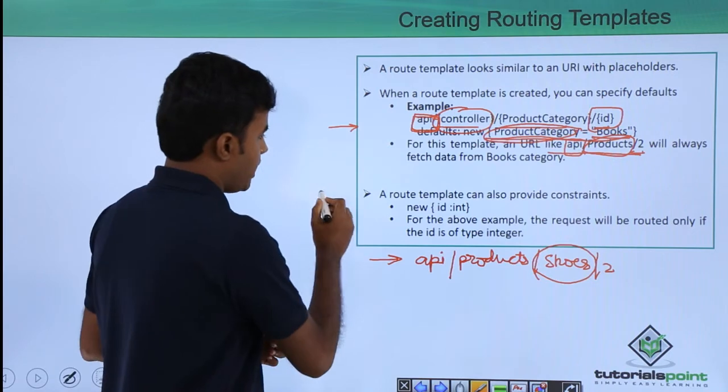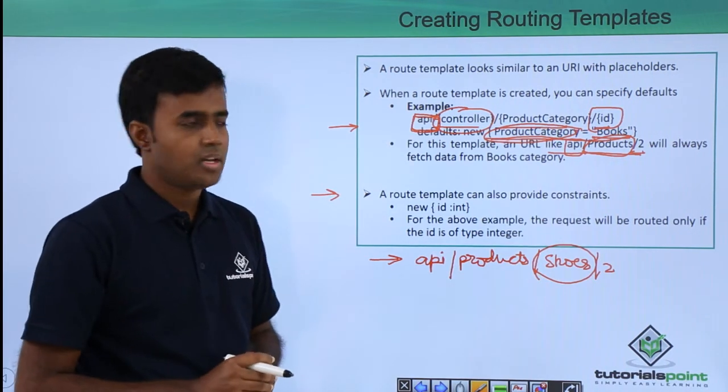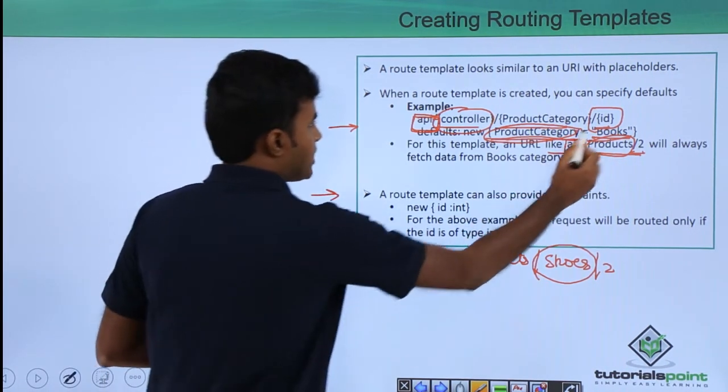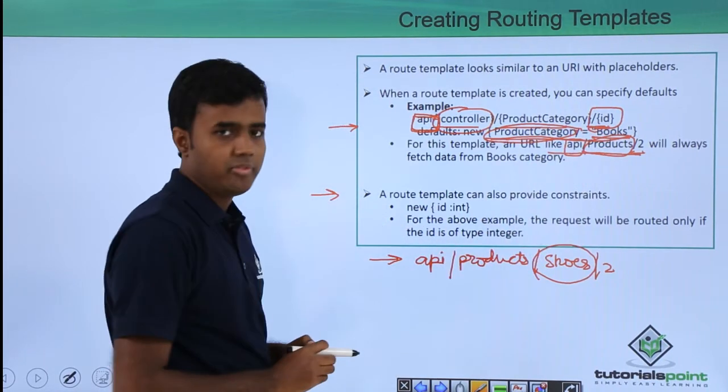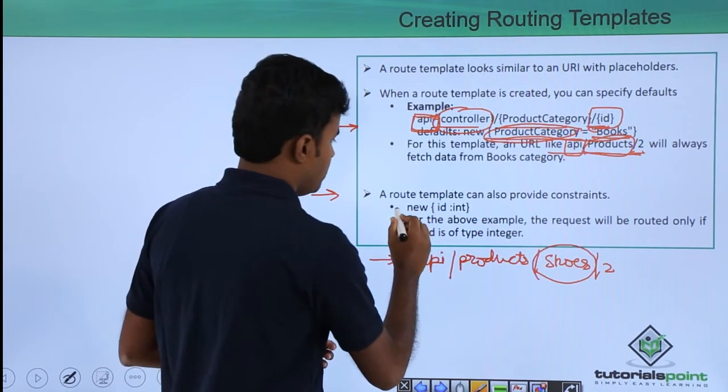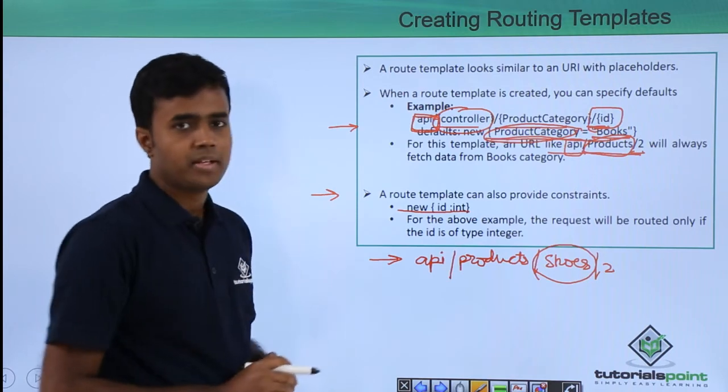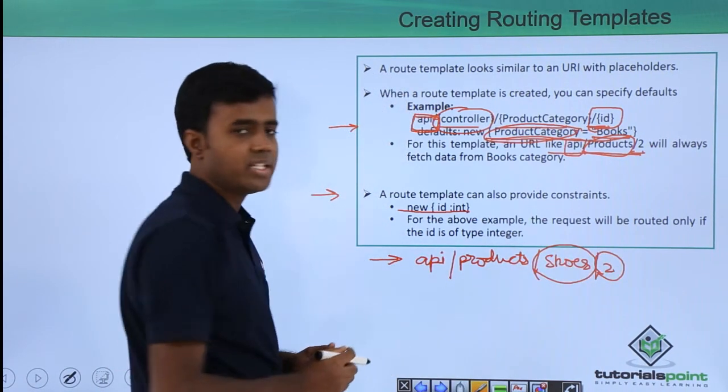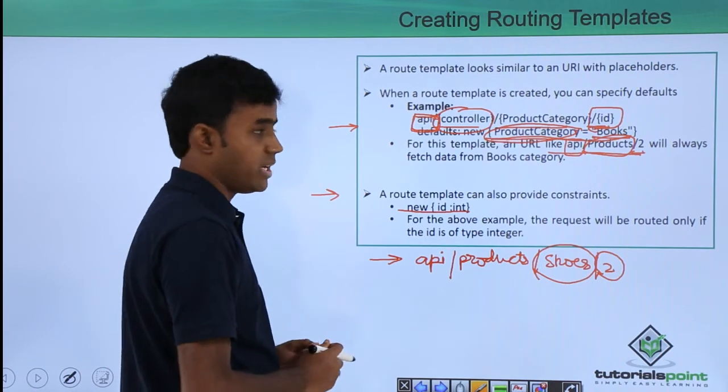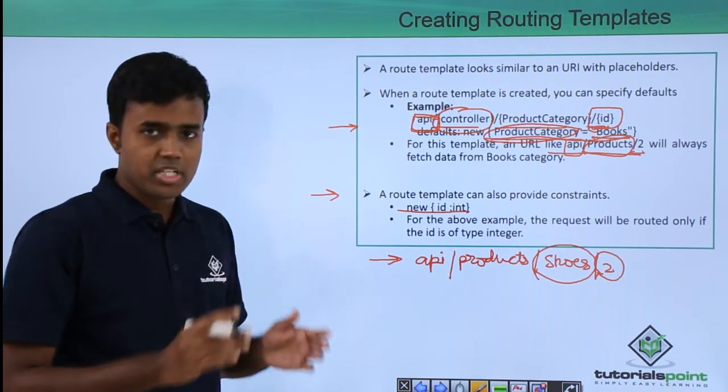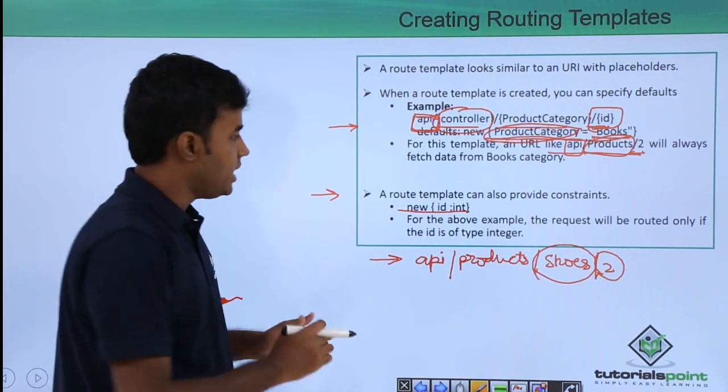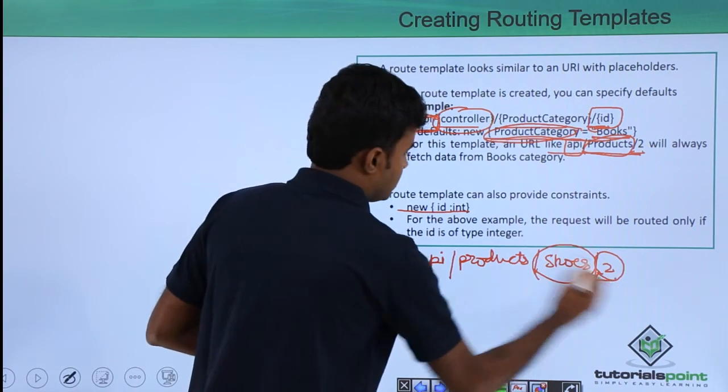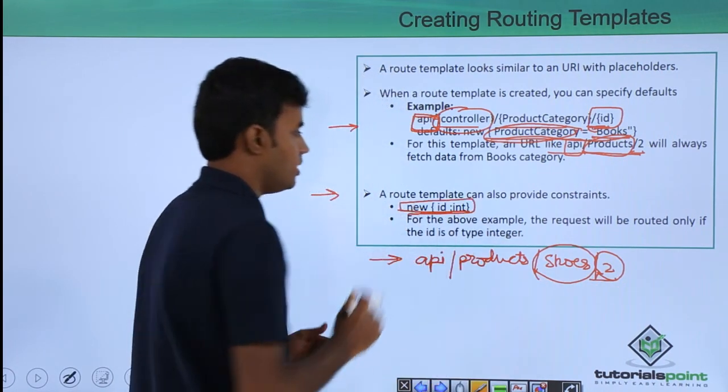A route template can also provide constraints. For example, if you want this ID only to be of type int, you just need to say ID of int. If the user provides anything other than integer, for example if the user is providing some string literal, the request will be ignored. And only the ones that match the constraint will be accepted.